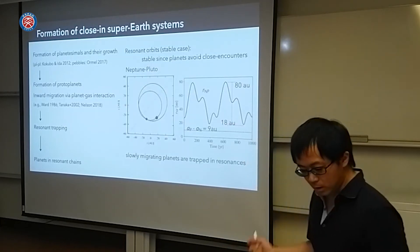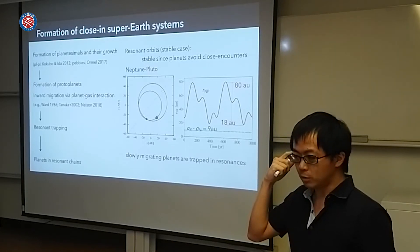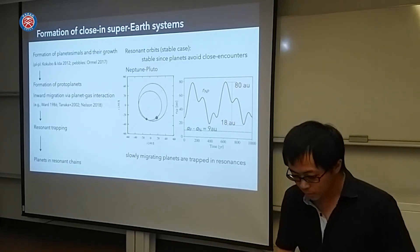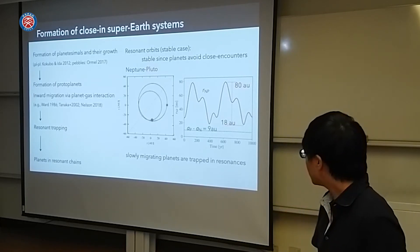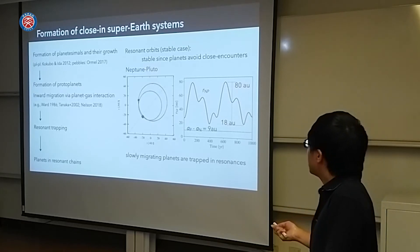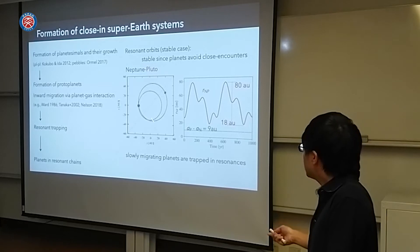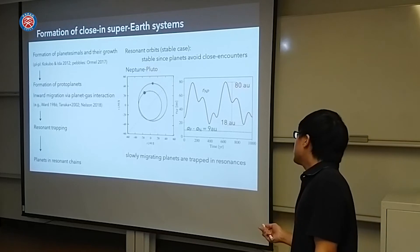It is well known that the resonant orbits are very stable. This is the Neptune-Pluto system. Neptune-Pluto system's orbital crossed. Their orbits are crossed, but they are long-term stable.